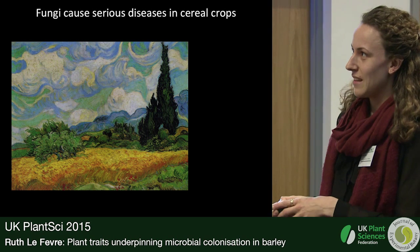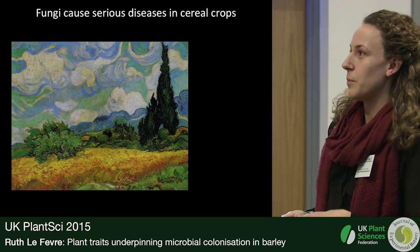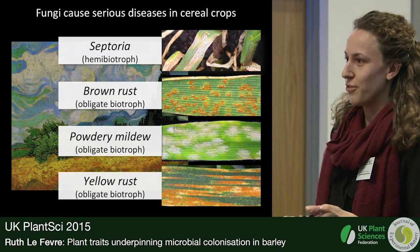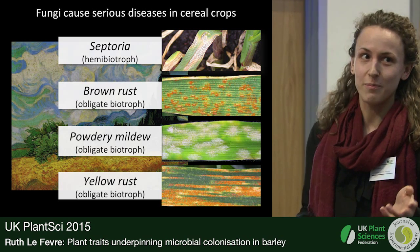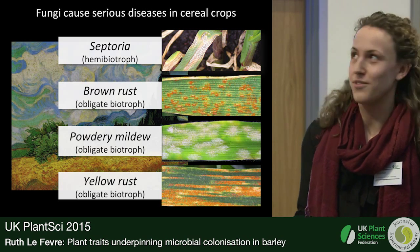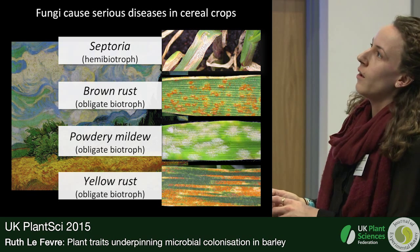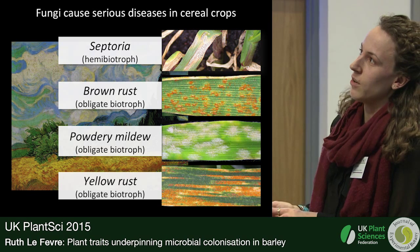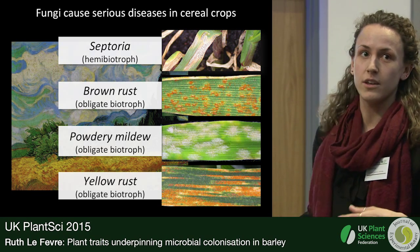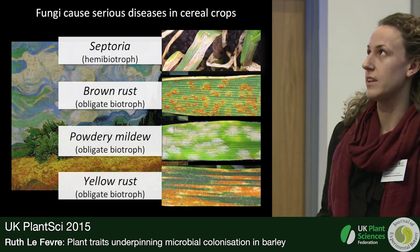This is a famous painting by Van Gogh, which depicts a wheat field. In this wheat field are probably lurking multiple different filamentous microbial pathogens. Septoria is a notorious wheat pathogen; brown rust, powdery mildew and yellow rust are wheat and barley pathogens. These are all fungi and they cause really serious diseases in crops and can lead to massive yield losses every year.